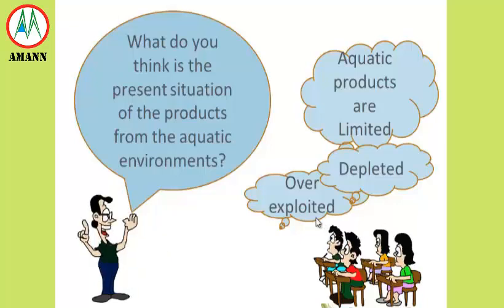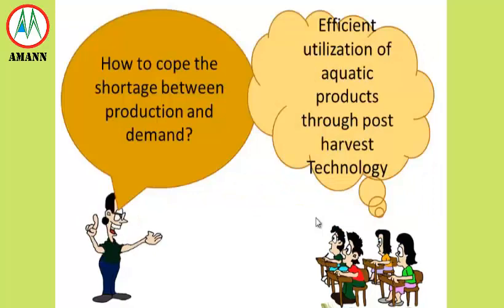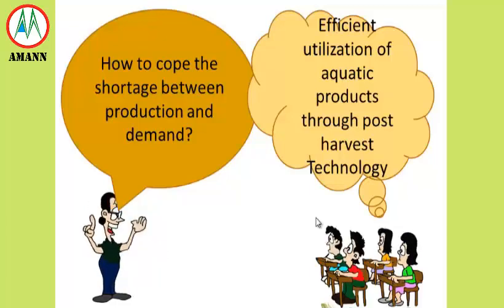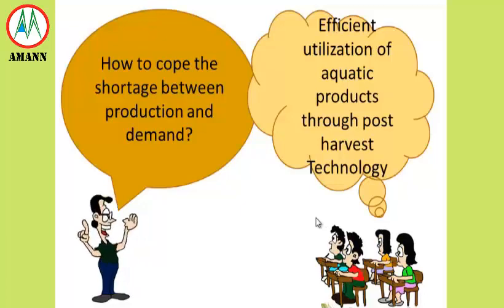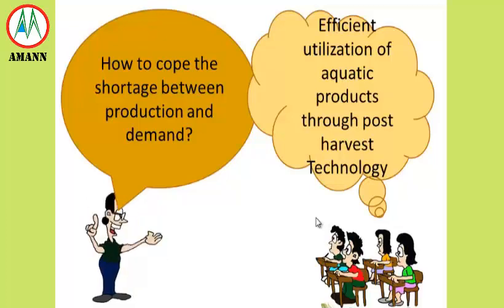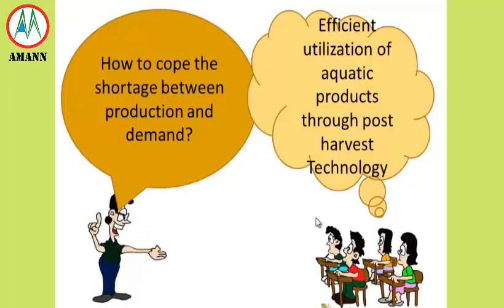Simultaneously, the demand for protein worldwide is increasing as the human population grows. One means of reducing the gap between production and demand is to efficiently utilize aquatic resources by the application of effective processing technologies to reduce post-harvest losses and wastage.